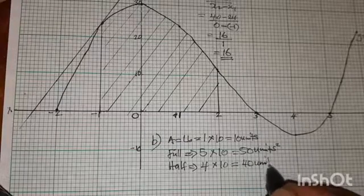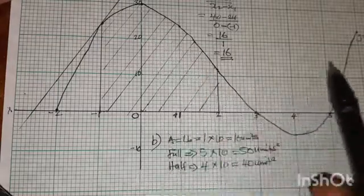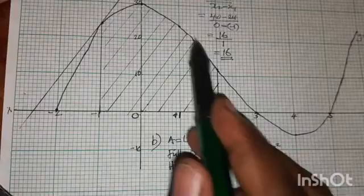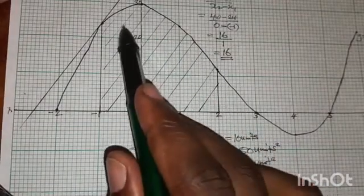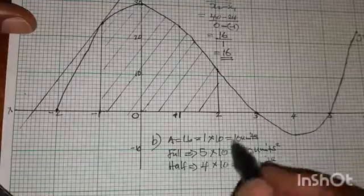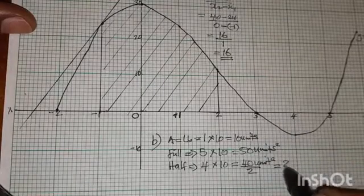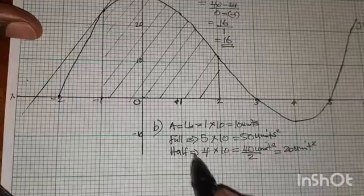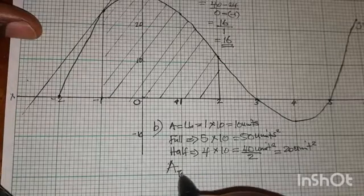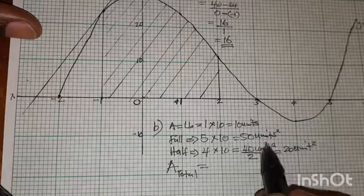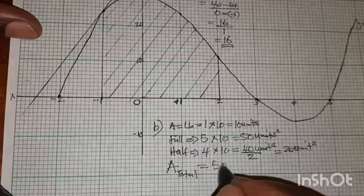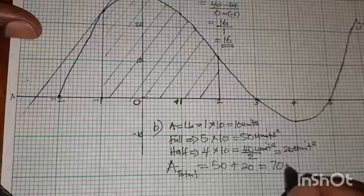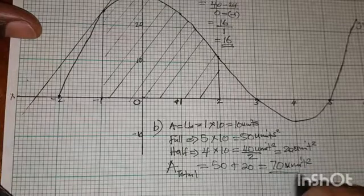Now we find the total area. It's like combining the halves to make full squares. Total area = 50 + 20 = 70 square units. So the estimated area bounded by the curve is 70 square units.